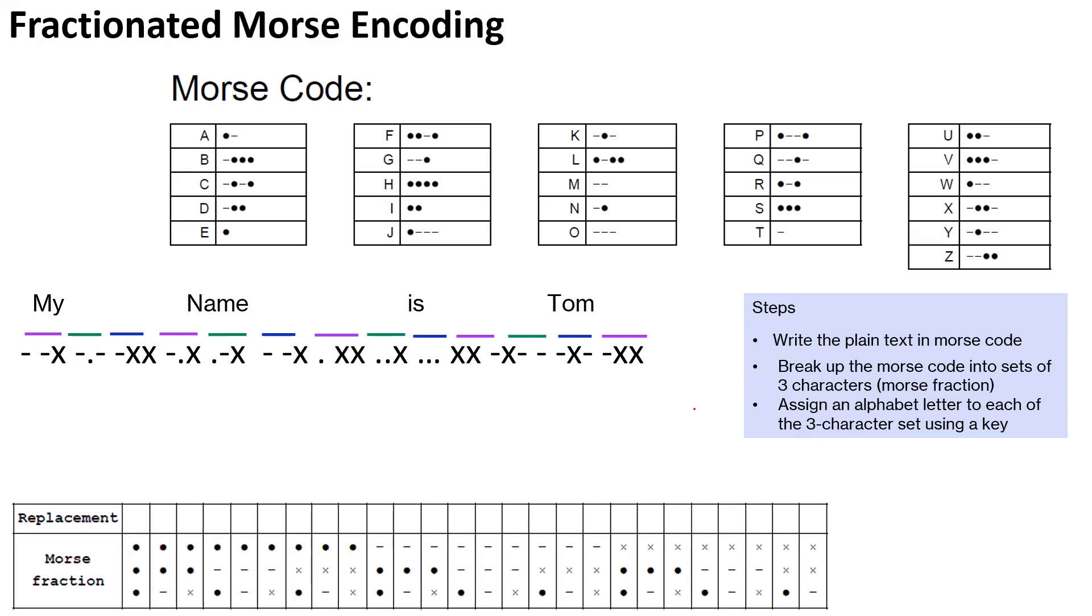And now we will have this replacement table. And in step three, what we are doing is we are going to assign an alphabet letter to each of the three character set using a key. In this case, we will use the key CODE BUSTER. So this works very similar to the K1 alphabet aristocrat, wherein you start with a keyword. So here our keyword is CODE BUSTER. So we'll write it here. And then once you are done with the keyword, you continue filling in the other letters in the alphabet starting from A.